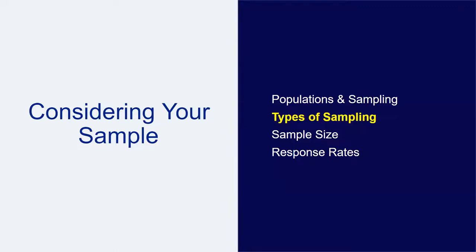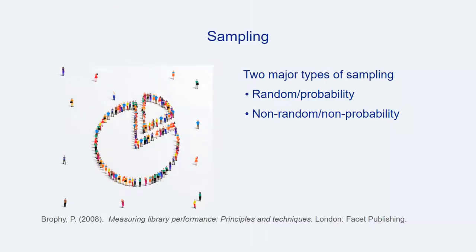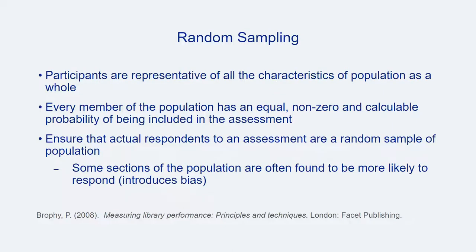Once a decision is made to use a sample rather than a population in a study, the next decision is to determine the best and most appropriate sampling plan for a particular study. There are two major types of sampling: random sampling and non-random sampling. In a random sampling scenario, the goal is to have assessment participants that are representative of all the characteristics of the population as a whole. Strategies for this approach attempt to ensure that every member of the population has an equal probability of being included in the assessment.